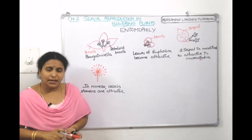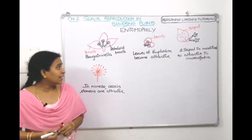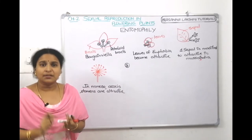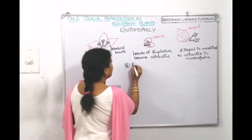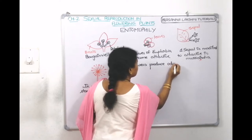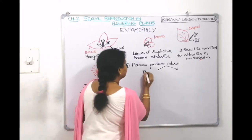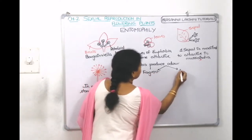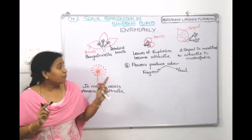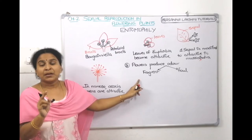So if a flower is dull, the other parts — bracts, leaves, sepals, or stamens — get modified to attract insects. Coming to the third characteristic: flowers produce odor. Some flowers produce fragrant odor and some flowers produce foul odor.